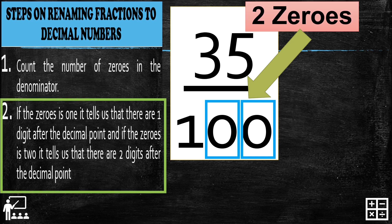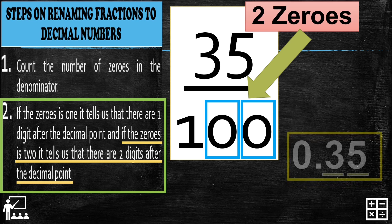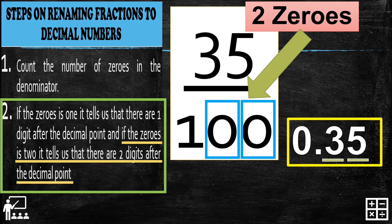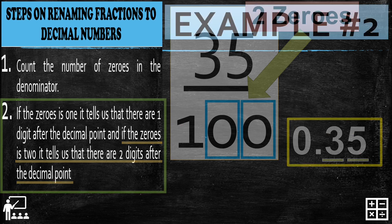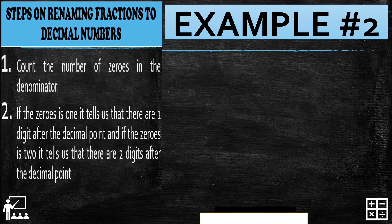Since there are two zeros on the denominator, we proceed to the rule: if the zeros is 2, it tells us there are two digits after the decimal point. So my answer is 0.35. As you can see, there are two digits after the decimal point — 3 and 5 — because there are two zeros on my denominator.